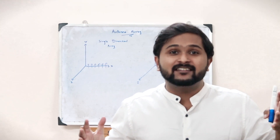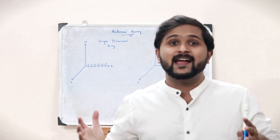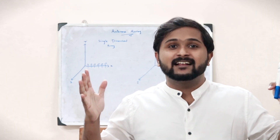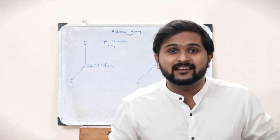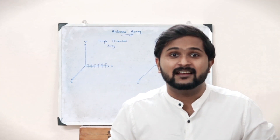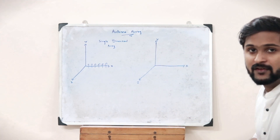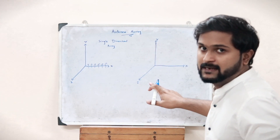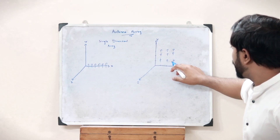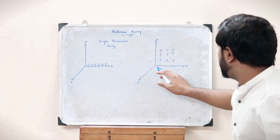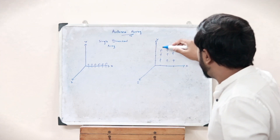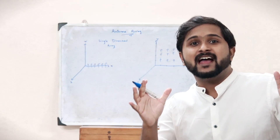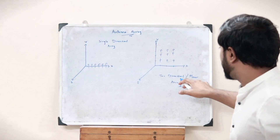If the elements of the antenna array are placed across a particular plane — such as the x-y plane, y-z plane, or z-x plane — then that kind of antenna array is called a two-dimensional antenna array or a planar antenna array. For instance, if antennas are arranged across the y-x plane, the entire system is a planar antenna array.